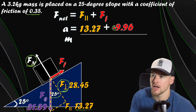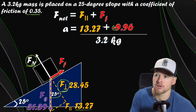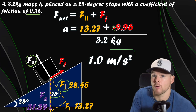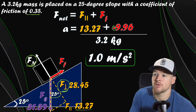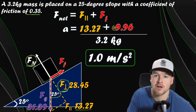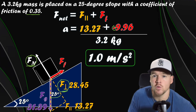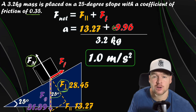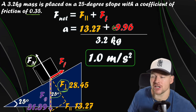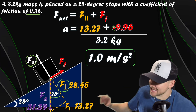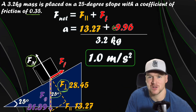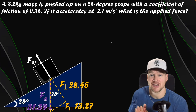Taking the product of those values and dividing by the mass of 3.2 kg, we get an acceleration that rounds to 1.0 m/s². So the friction slowed down the acceleration — the mass accelerates at 1.0 m/s² down the ramp.